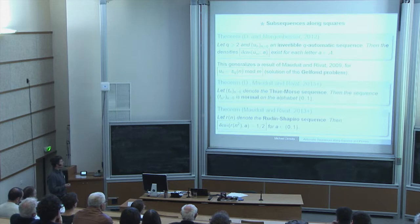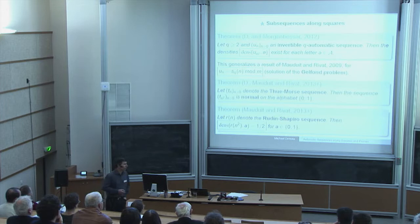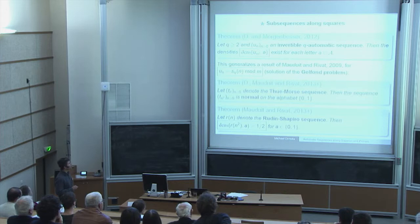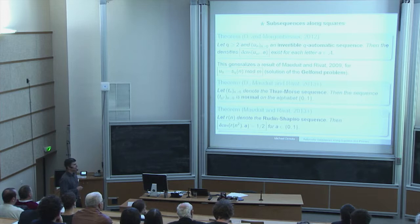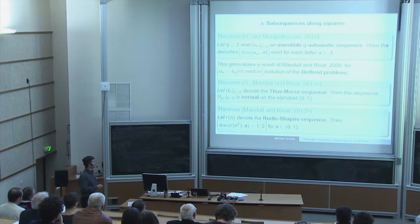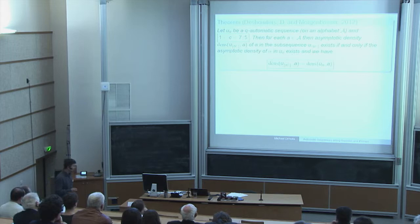A very recent result by Mauduit and Rivat says that if you take the Rudin-Shapiro sequence — which is not invertible — and take the subsequence of squares, you again get a uniform distribution. That is what is known for squares. It would be interesting to get rid of the invertibility assumption. In general it would be false, but the conjecture is that for any q-automatic sequence, the logarithmic densities for each letter of the subsequence of squares should exist.